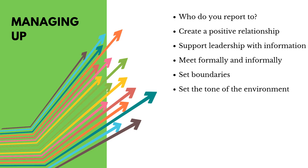It's also important to set boundaries — what the library can and can't do and what it's there for. Having a positive relationship with the principal and school leadership will help you to ensure the library is respected and the library staff, including yourself, are not commandeered every time an extra set of hands is needed. This can happen if the principal and leadership don't understand the size and complexity of the TL role. If your principal only sees the tip of the iceberg and doesn't have an understanding of the large amount of invisible work that is happening under the surface, then you may find that the role and the space is undervalued and misused. So managing up is a very important part of the TL role.